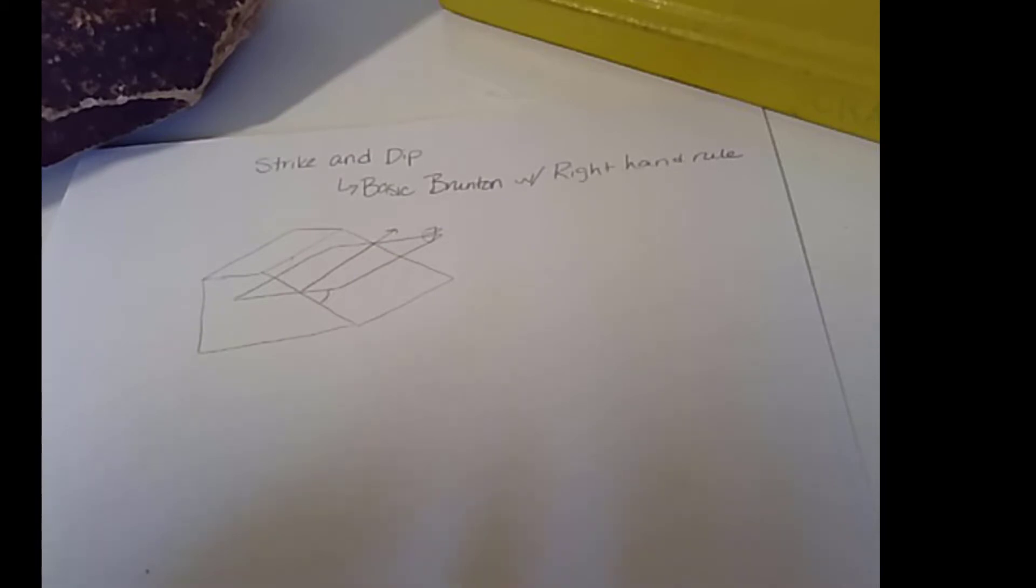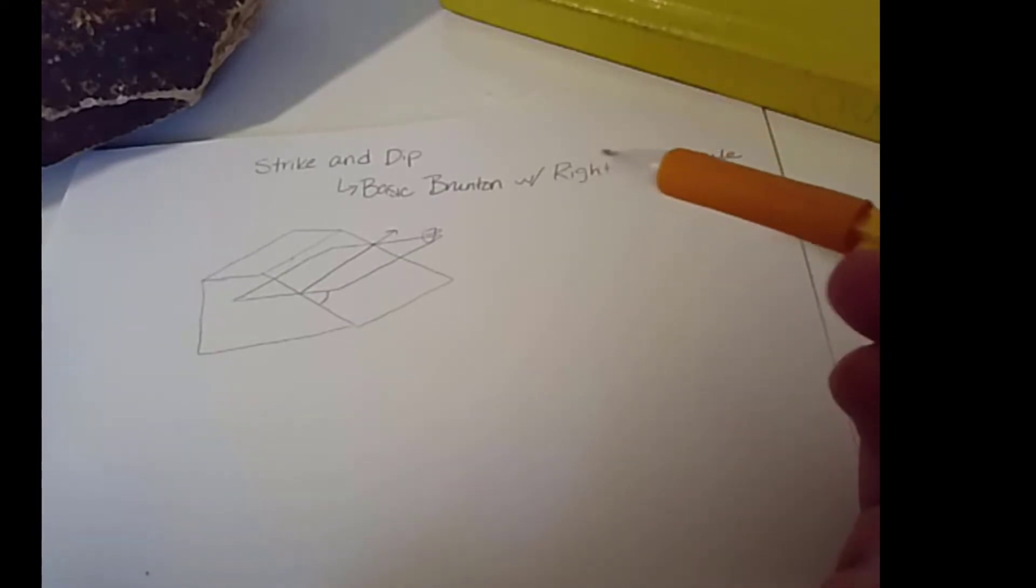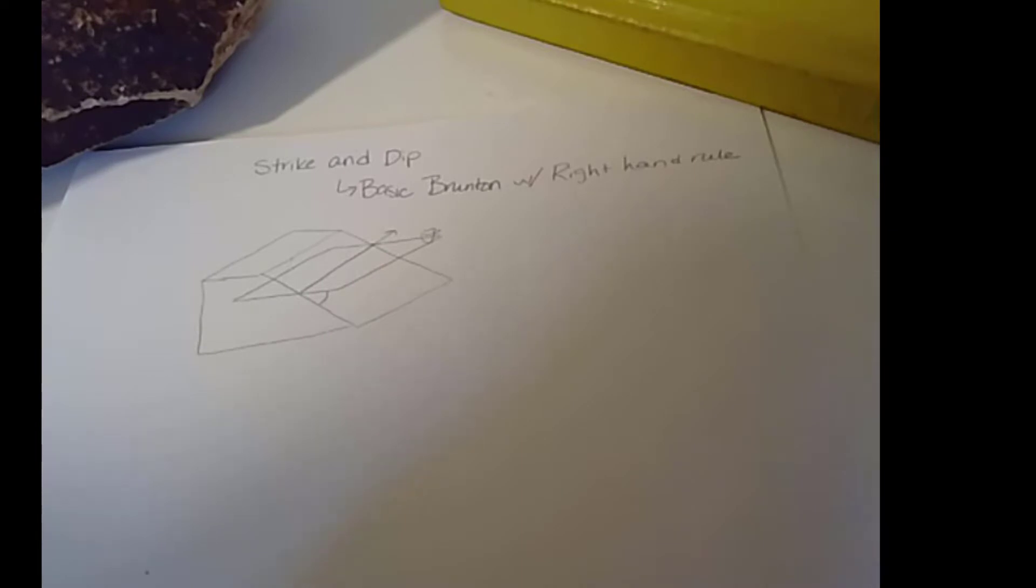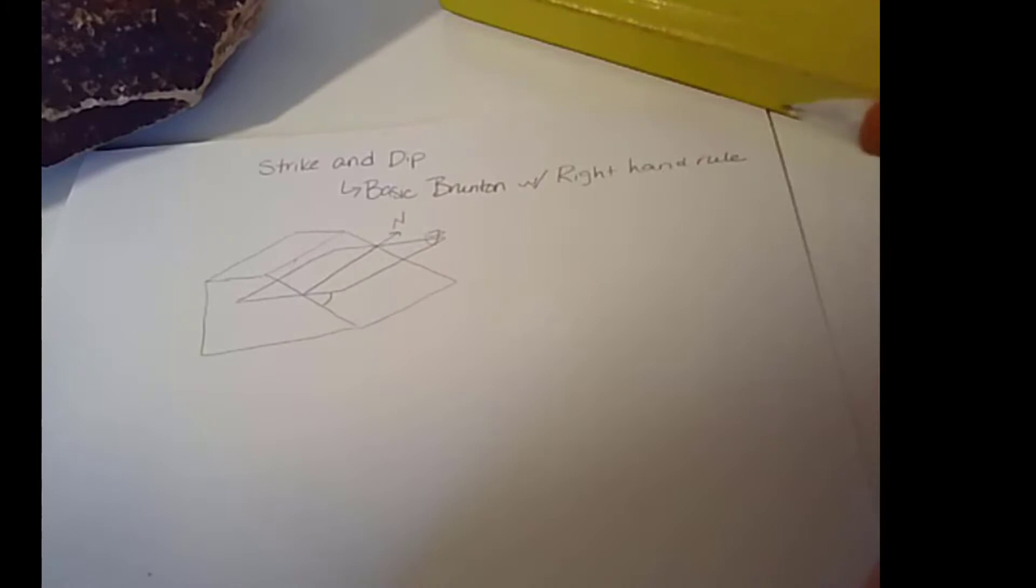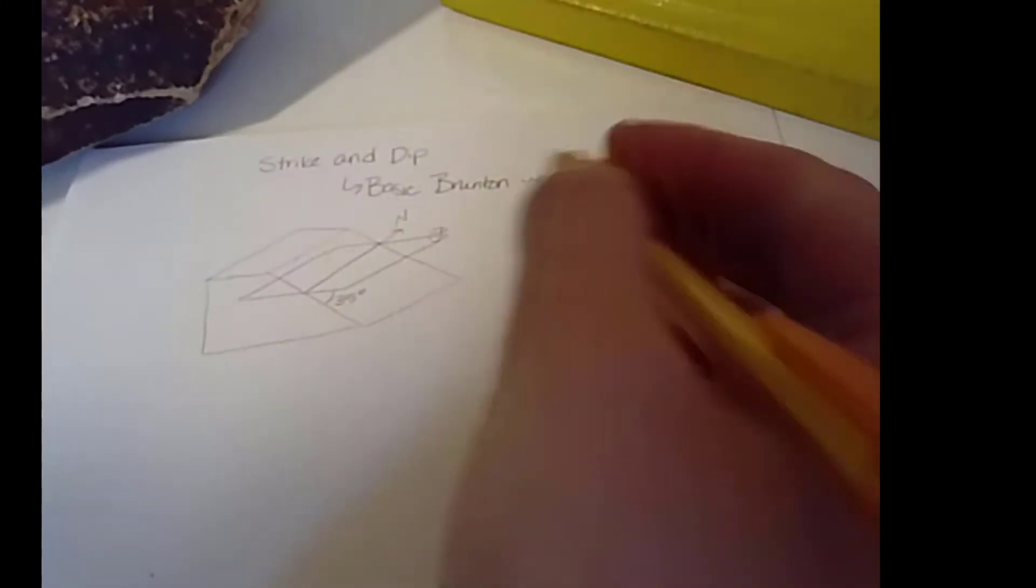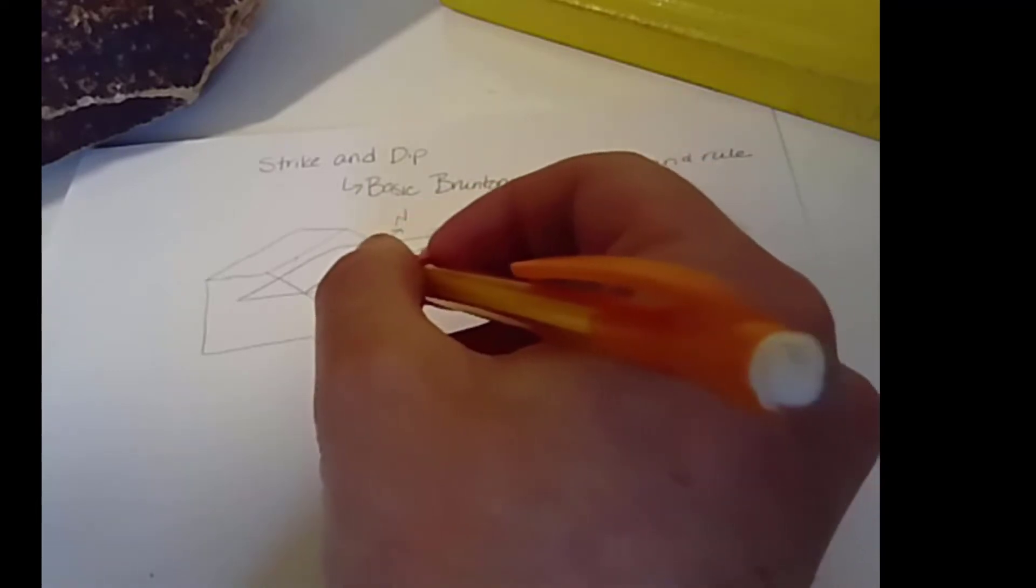When we write strike and dip, we write strike as an orientation between 0 and 360 degrees, or you might write it in quadrant notation. Then we write dip as an amount between 0 and 90 degrees. I am a real fan of including as much information as possible. So let's say that this line, or the strike line, is trending due north, and this is 35 degrees. If that's north, then this direction is to the east.